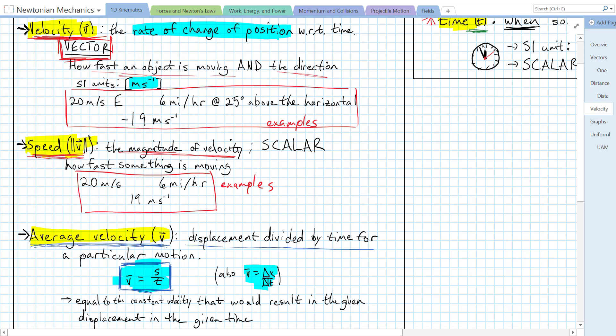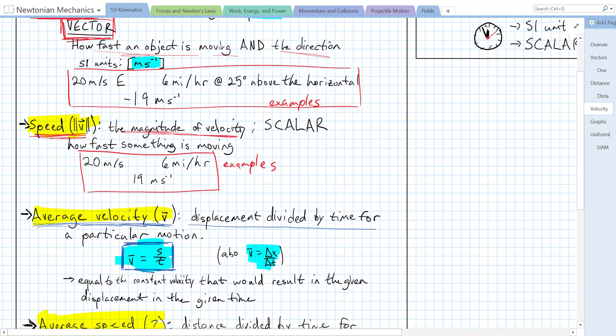So for a particular motion, if, for example, I go around a 400-meter track in, let's say, about three minutes, my average velocity is going to be displacement over time. It's going to be zero, because my displacement is zero when I go around that track one time. On average, I was not moving at all for that period of time.